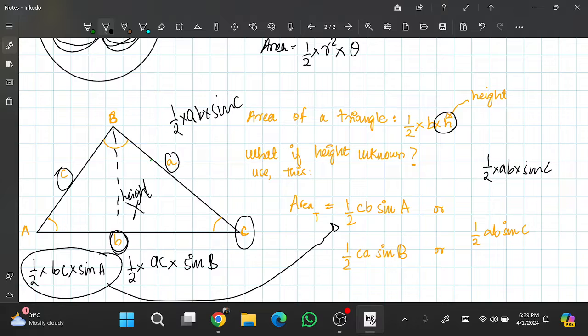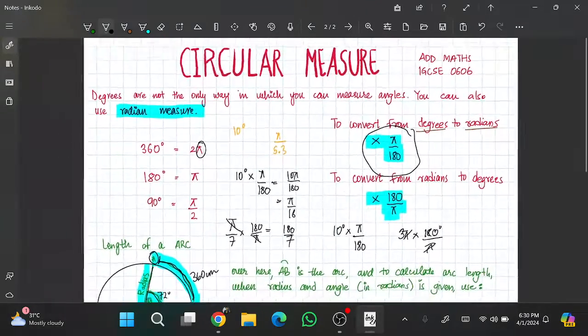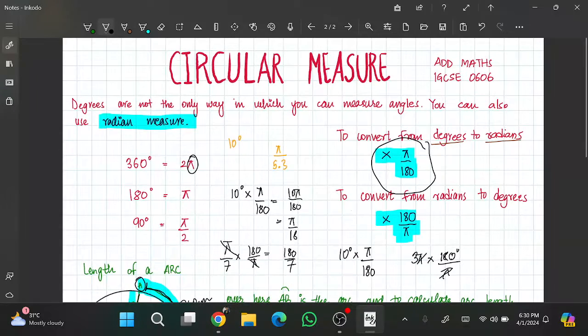Now you use this formula when the height is not given. But if the height is given, it's a right angle triangle or even like this, you can do 1/2 base times height and easily get the area. So now this was the theory part of circular measure.